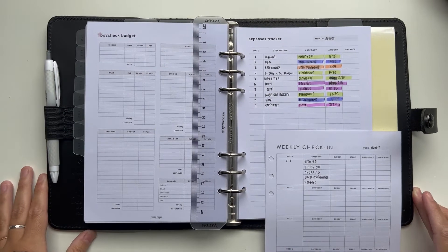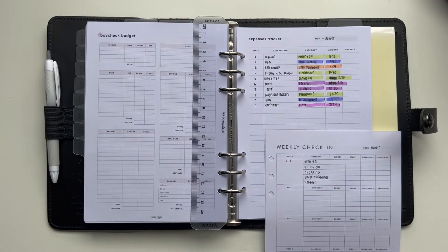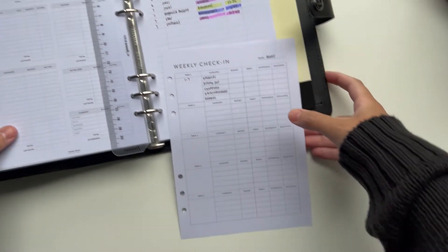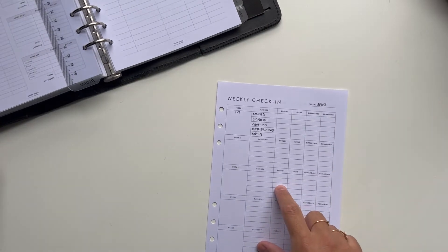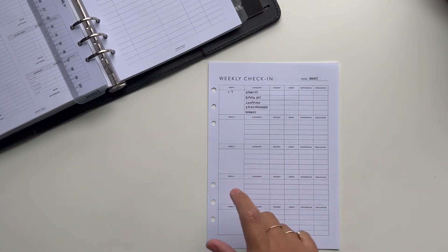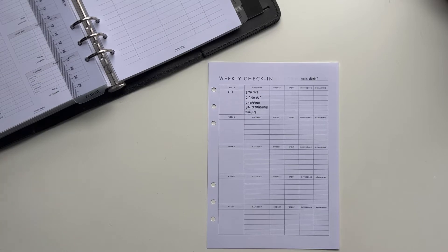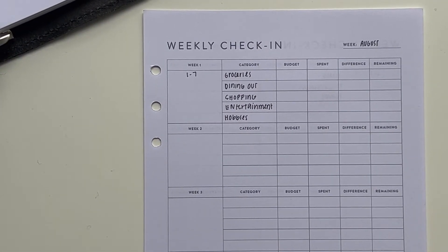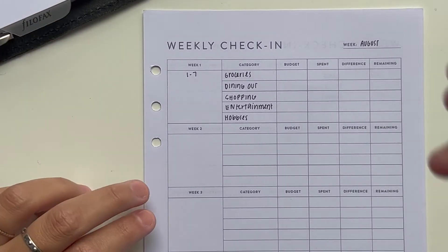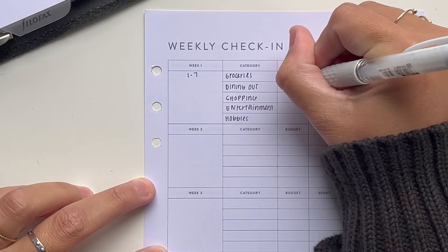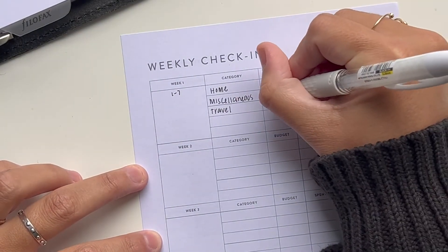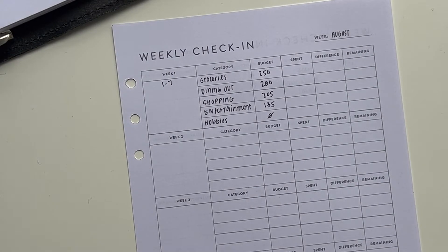Okay, so I have gone through and written out all the expenses that I've had so far for this week. So we're just going to go ahead and fill out my weekly check-in sheet. And I'll zoom in a bit. So first, let's go in and write out the budget for each of the categories.